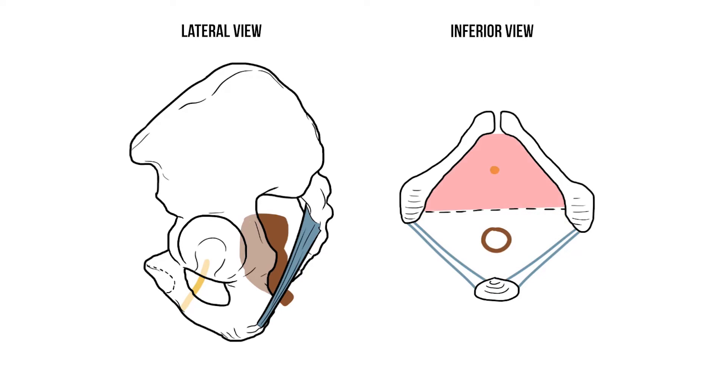The space in front of the line contains the urethra, and as we'll see later it also provides attachment for the external genitalia, so we call this the urogenital triangle.